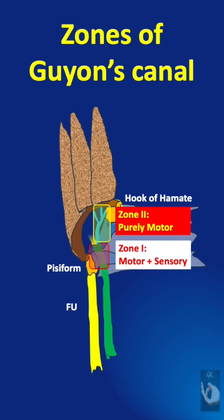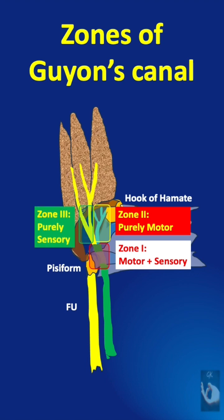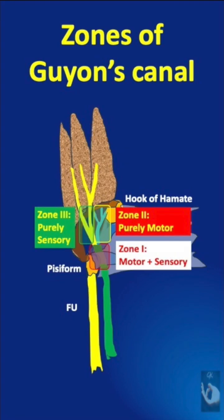Zone 3 is lateral to Zone 2. It is superficial to the hypothenar muscles and may be covered by the palmaris brevis muscle. It is predominantly sensory with only a few motor fibers to the palmaris brevis. So the deficit is almost purely a sensory deficit on the little finger and ulnar half of the ring finger.